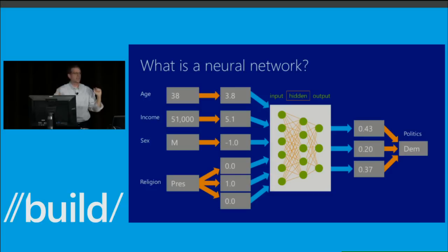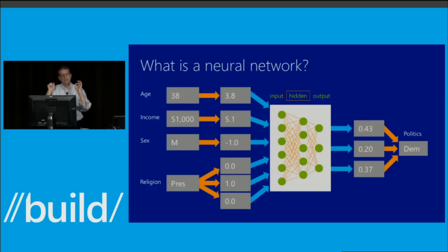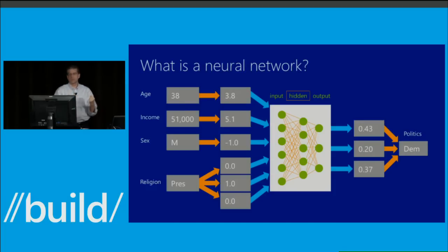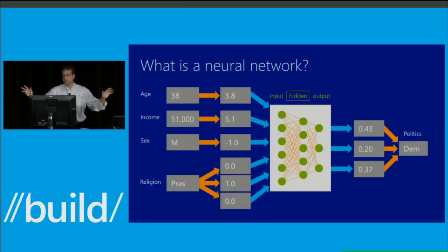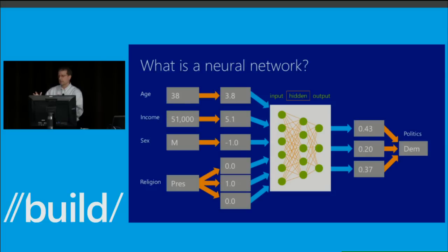The second column shows normalizing or encoding. I'm a mathematician — my PhD is in mathematics — and all the neural network literature glosses over this because it's not cool. But when you have to actually implement a neural network, the normalization process is absolutely critical. We've got an age of 38 and an income of $51,000. The computer doesn't know income is income — it just knows it's a larger number, which makes things much more difficult.